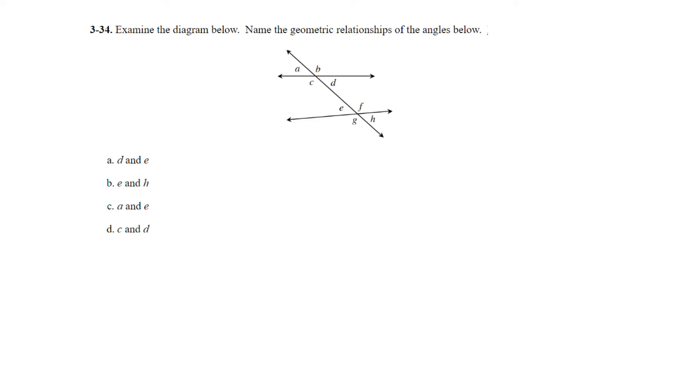Question 34. Examine the diagram below. Name the geometric relationships of the angles below. On part A, we are looking at angle D and angle E. The lines are not parallel, but we're just naming the relationships. Those are inside, think of in between, they're inside the two lines. So we're looking at interior angles, they alternate sides, so those would be our alternate interior angles. Let's look at B, which would be E and H. E is this angle, H is this one. This doesn't have to do with the other set of angles. We're looking at angles that are on the opposite sides of two lines that are crossing, so those are vertical angles.